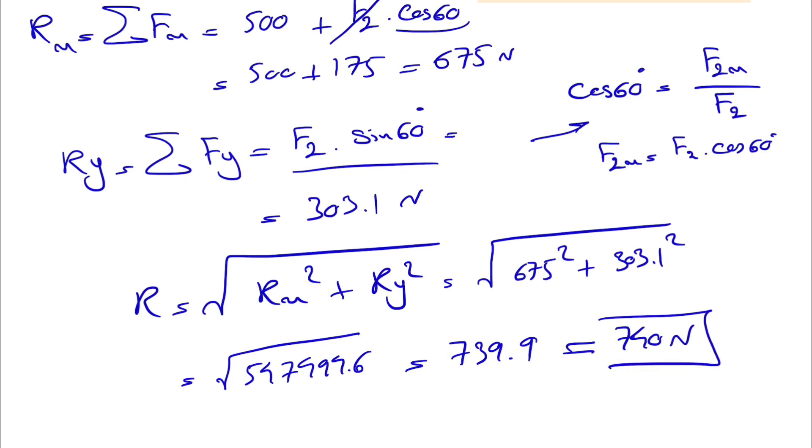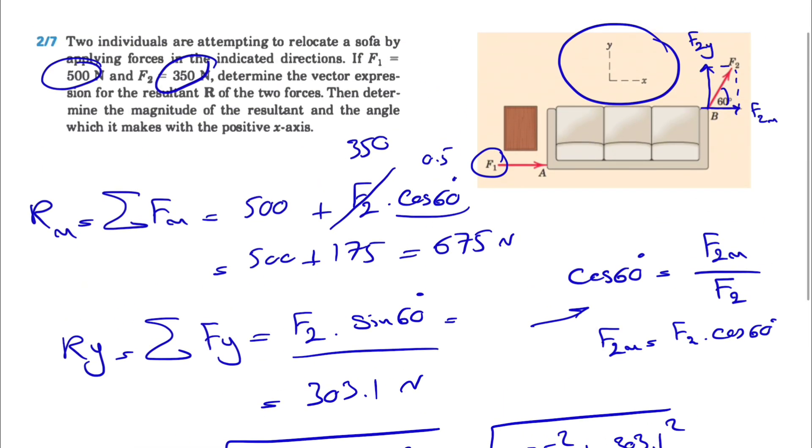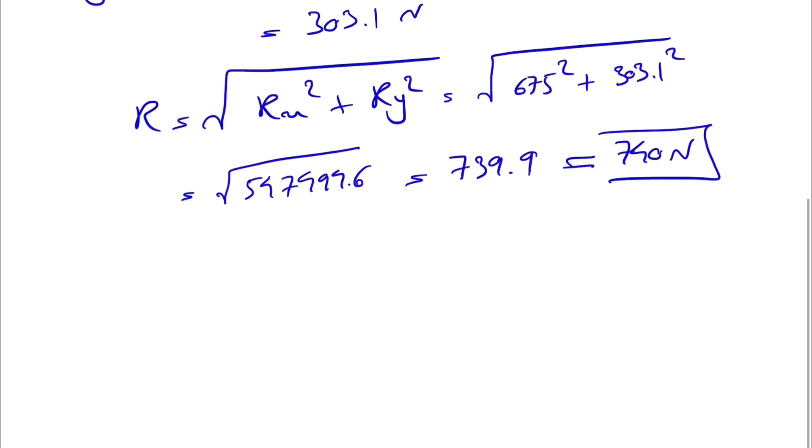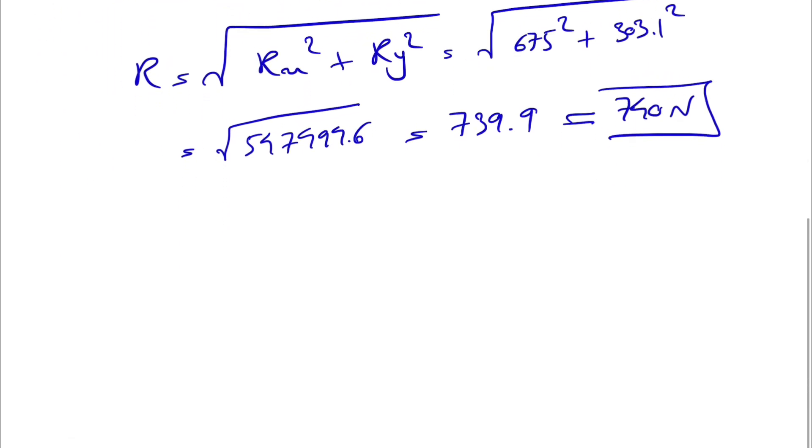So that's the first part of the question where we needed to find the magnitude. We also need to find the angle with x-axis. What we found at the end was both x and y components of R. Let's call this R. That would be our Rx and this will be our Ry. What we are interested in is this angle which will be the angle with x-axis.